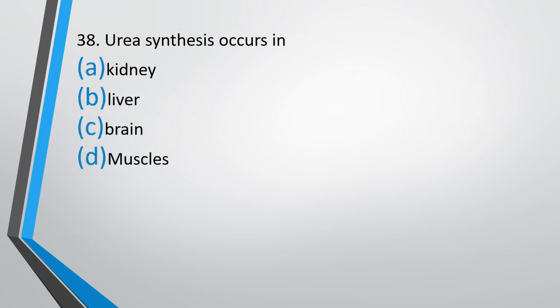Question number 38: Urea synthesis occurs in the kidney, liver, brain, or muscles? The correct answer is option B — it occurs in the liver.